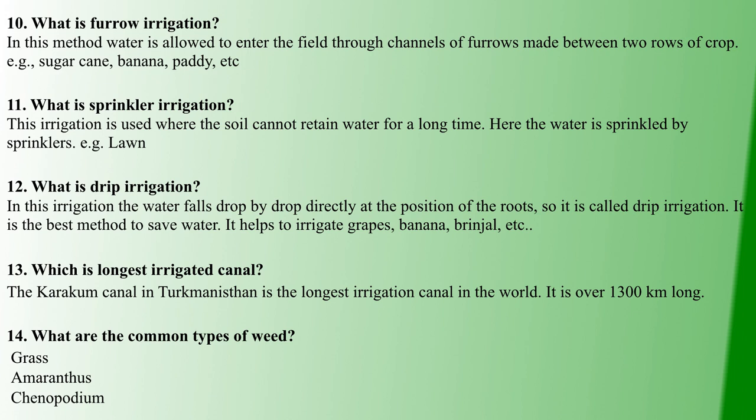Next question: What are the common types of weed? Weeds are unwanted plants. Common weeds include Grass, Amaranthus, and Chenopodium. These are the unwanted plants that grow alongside our crops.